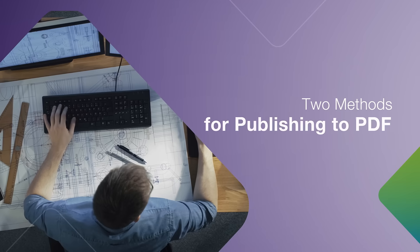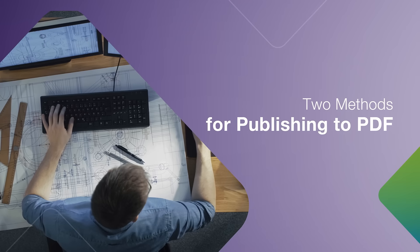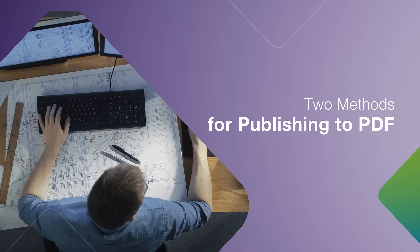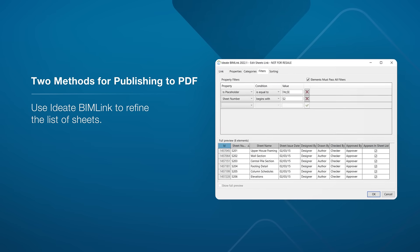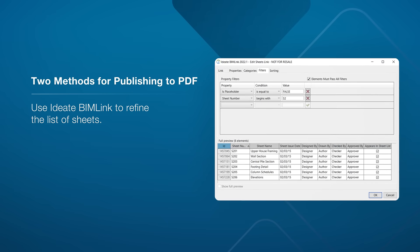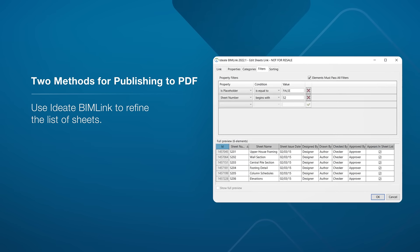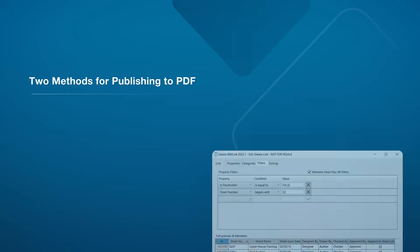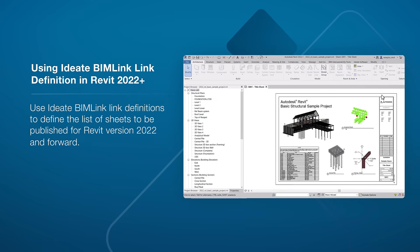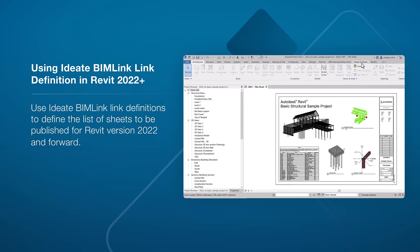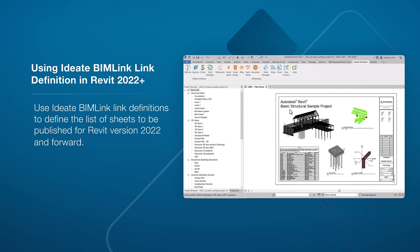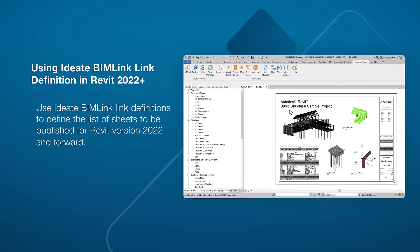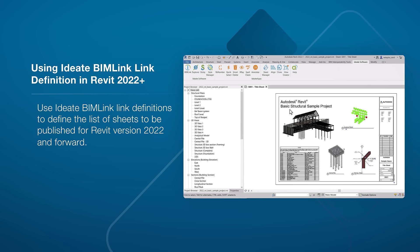ID8 Automation has several methods available for publishing PDF information from Revit sheets. The first method we will demonstrate will be using ID8 BIM Link to refine the list of sheets we would like to be published. ID8 Automation can use ID8 BIM Link link definitions to define the list of sheets to be published for Revit version 2022 and forward.